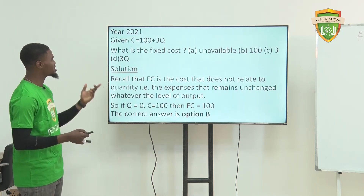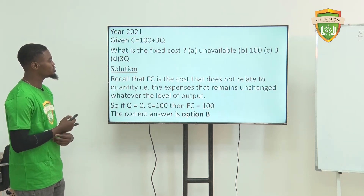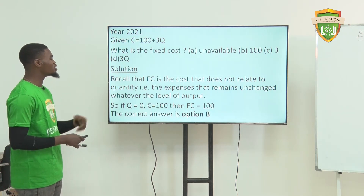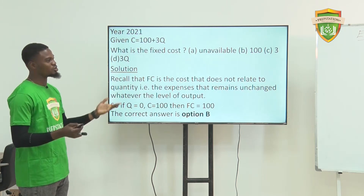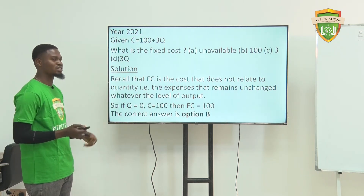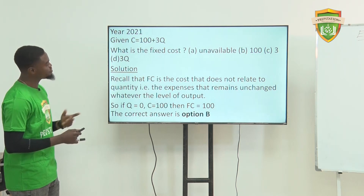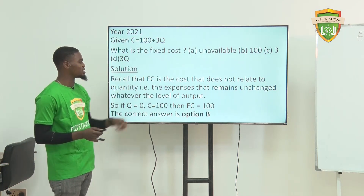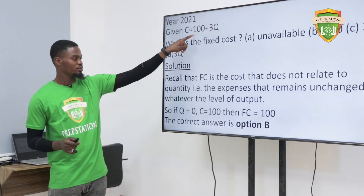In 2021, we are given C equals 100 plus 3q. Recall that fixed cost is the cost that does not relate to quantity — it is fixed. Examples of fixed cost include machinery, buildings, and salary payments; it is a cost you incur continuously. The expenses may not change whatever the level of output. So since q equals 0, C equals 100, then FC will be 100, because that component is not changing — it could automatically be your fixed cost.